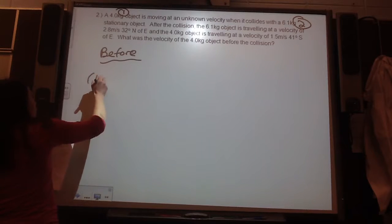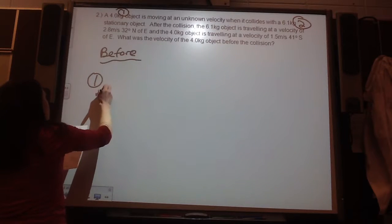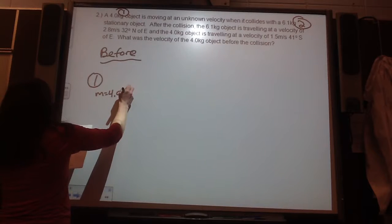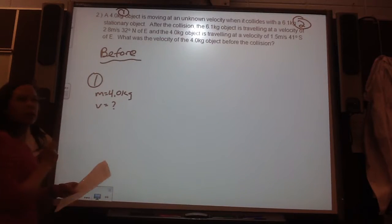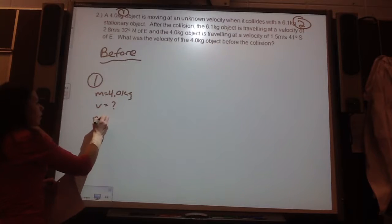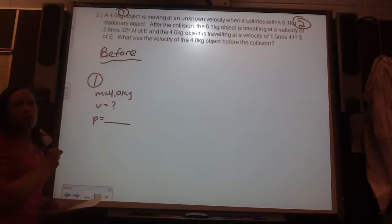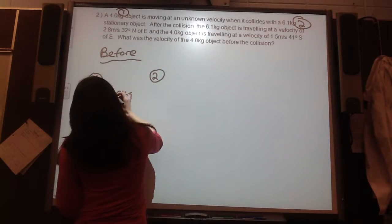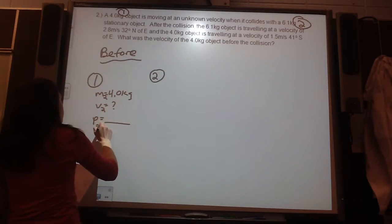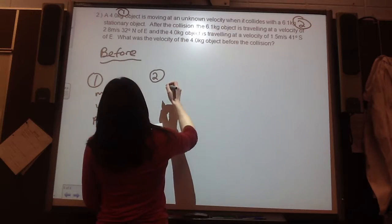So, for object 1, its mass is 4 kilograms. Its V is what we're actually looking for, and so our P is also unknown. And then for number 2, I should call this M2, V2, P2. And V1, M1.